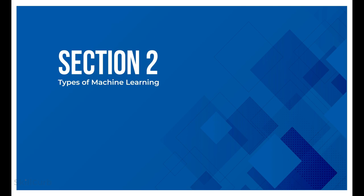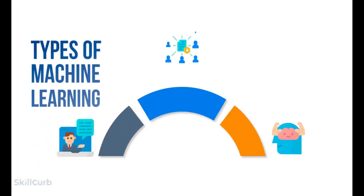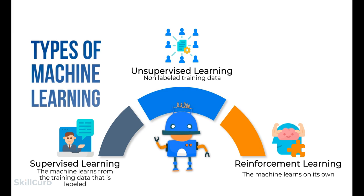Now that we are familiarized with machine learning, the next step is to know its types. As we have different types and forms of input data, there exist three types of machine learning: supervised learning, unsupervised learning, and reinforcement learning. In supervised learning we have labeled input data. Contrary to that, there is no labeled data in unsupervised learning. And in reinforcement learning, the machine learns on its own to achieve the desired goal.